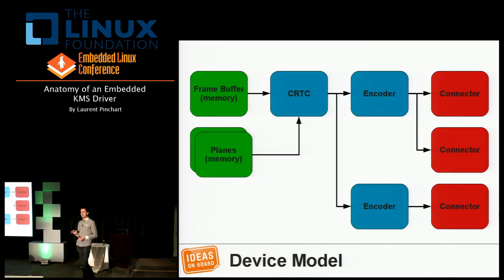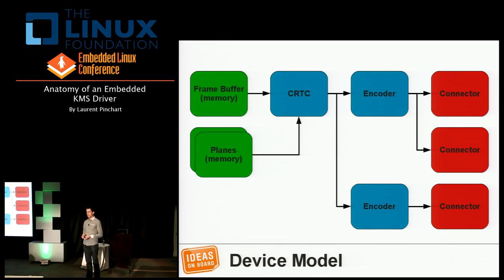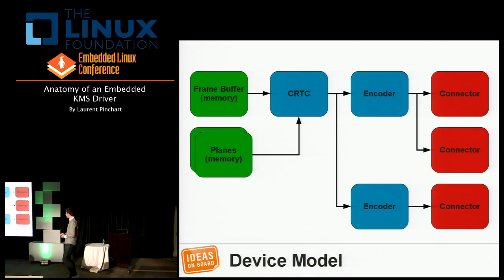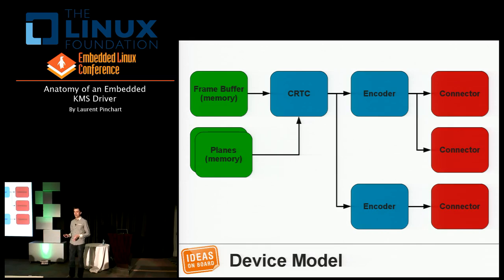Before diving into the kernel side, it's important to explain what the KMS device model looks like, because that's the core of KMS operation. You need to understand it from both the userspace and kernel side. KMS handles five different kinds of objects at its core. On the left you have the memory objects — the frame buffer is a piece of memory containing graphics data you want to push to the display.